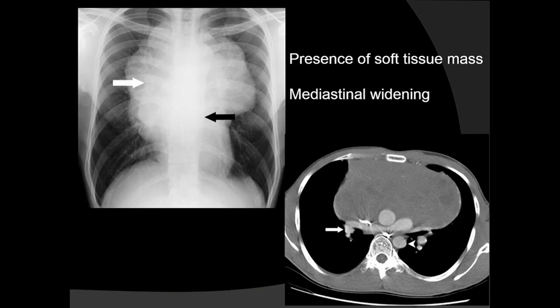This is a very obvious lesion — we see there is a soft tissue mass and mediastinal widening, and there is no doubt that there is a lesion here. The corresponding CT shows a large lobulated heterogeneous lesion, which turned out to be a lymphoma.